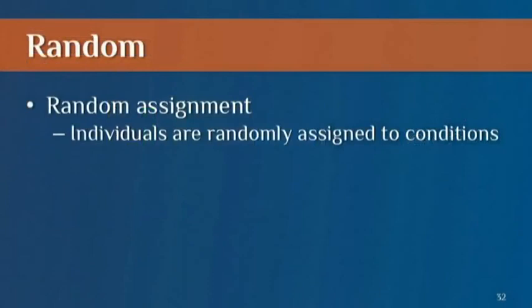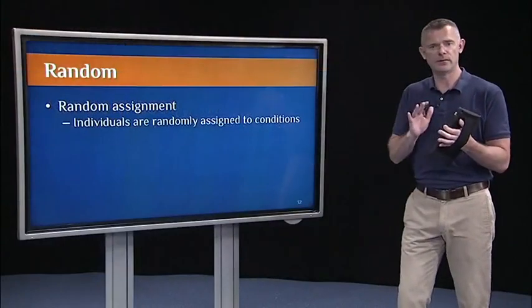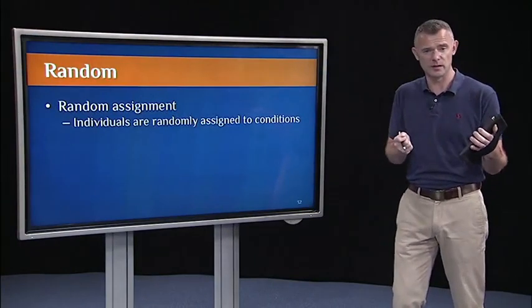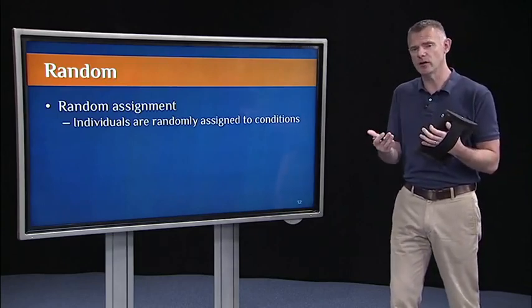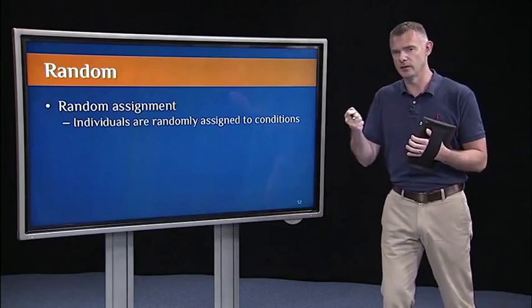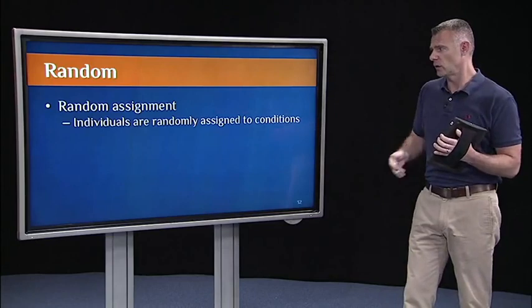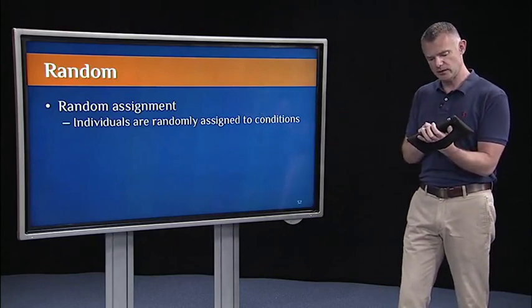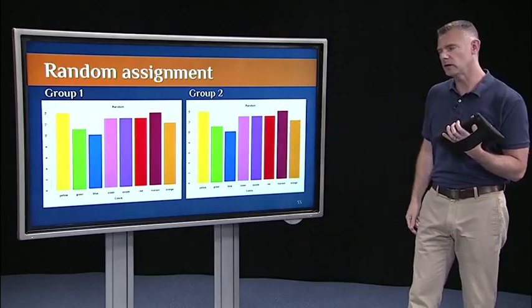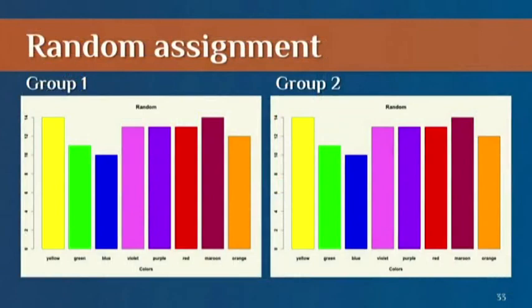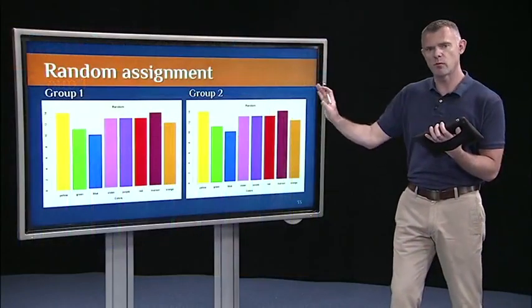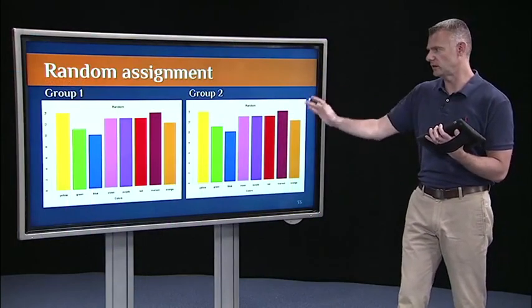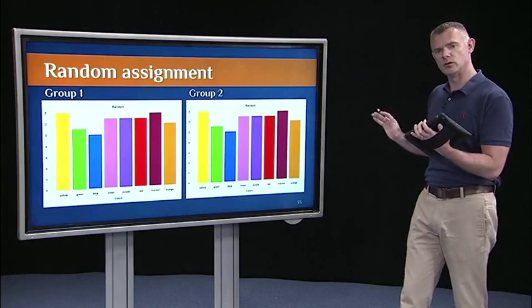So that was random selection from the population. Experiments also depend on random assignment to conditions. We want there to be a 50-50 chance, for example, that a child gets either the vaccine or the placebo. Or for example, that a subject coming in to do memory training, we want there to be a 50-50 chance that they get assigned to either the true memory training condition or a control condition. So there's random assignment to conditions. And if we successfully assign subjects to conditions, then we should get something that looks like this with respect to this color wheel example. Group one and group two not only should they have this sort of uniform distribution of colors, but they should also look similar. Group one should have a similar distribution to group two. This is an example of random assignment to two groups or two conditions in an experiment.